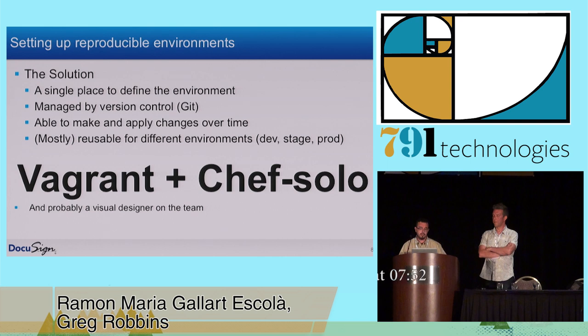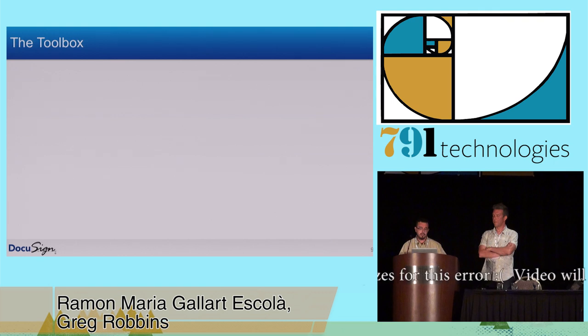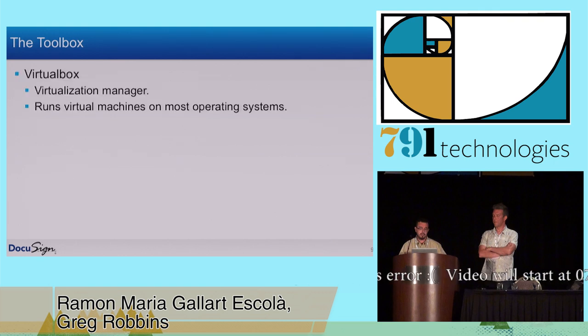Vagrant and Chef Solo is what we need. And probably a visual designer for our presentations, because that's not what we're good at. So Ramon, do you want to talk a little bit about the toolbox?